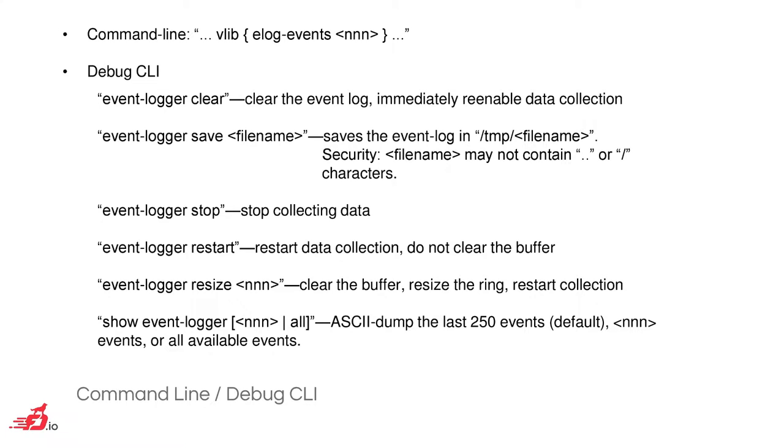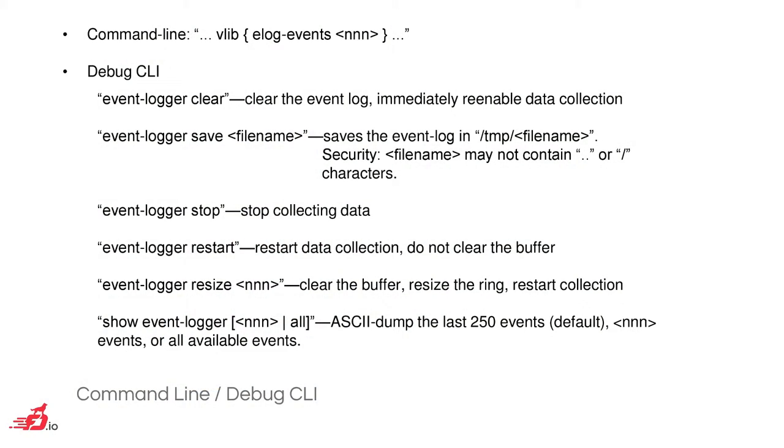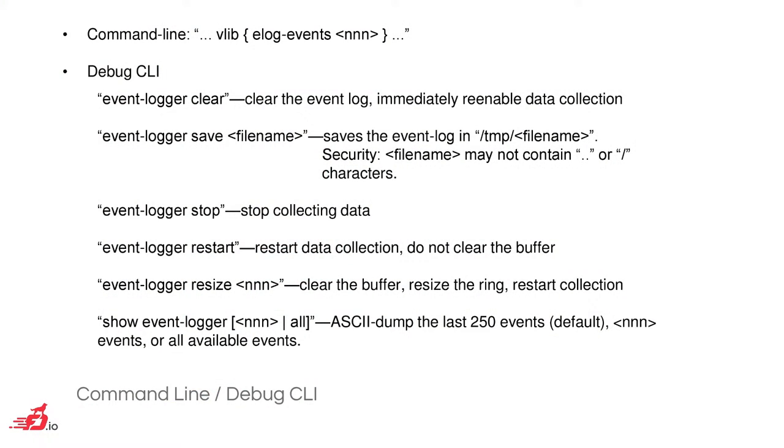The command line is pretty simple: vlib event-log nnn, where it'll round to a power of two. The debug CLI supports event-logger clear, save into a file name. For security, when you say event-logger save foo, the file ends up in /tmp/foo, and the path name can't have dot-dot or slash in it — the last thing you want is somebody wiping out your grub config. This was found during a white-box security inspection before open sourcing.